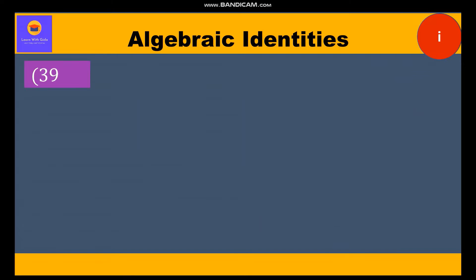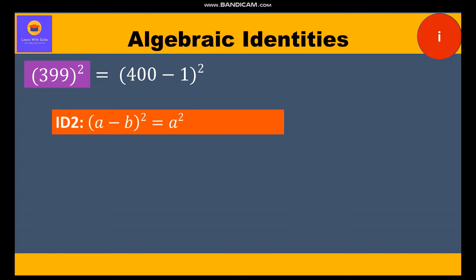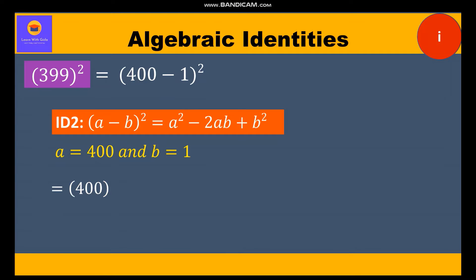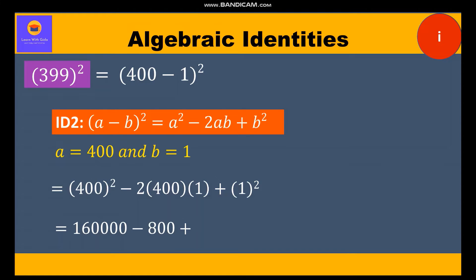The first part is 399 whole square, which can be written as (400 minus 1) whole square. This is identity 2: (a - b)² = a² - 2ab + b². Here a = 400 and b = 1. Substituting, we get 400² - 2×400×1 + 1² = 1,60,000 - 800 + 1 = 1,59,201.